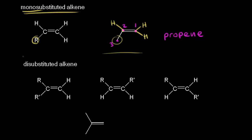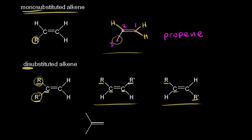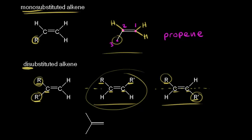Let's look at a disubstituted alkene — two R groups, R and R prime, which might be the same or different. Here R and R prime are on the same carbon, but it's possible to have a disubstituted alkene where R and R prime are bonded to different carbons. In another example, R and R prime are bonded to different carbons but on opposite sides of the double bond, whereas in the previous example both R groups are on the same side. We know that one of these doesn't rotate to form the other because there's no free rotation around our double bond.